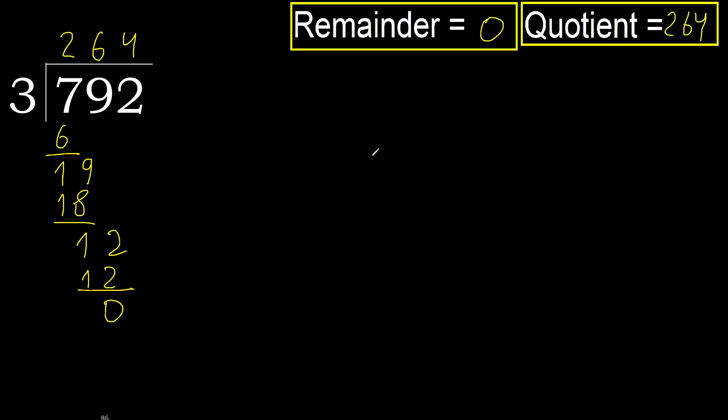Okay, 0. Therefore 792 divided by 3 is here.